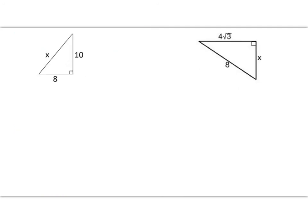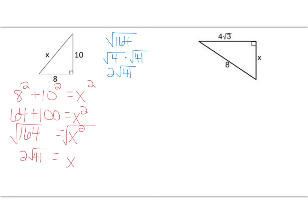Here are two for you to try. In the first one, find the hypotenuse and leave your answer in simplified radical form. I got x = 2√41. You can see how I simplified the square root of 164 — 4 goes into 164 forty-one times, the square root of 4 is 2, the square root of 41 is irrational, and I get 2√41.